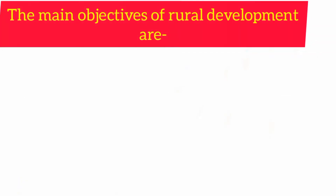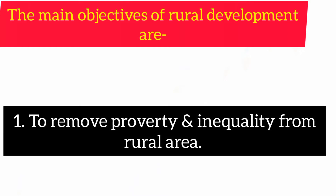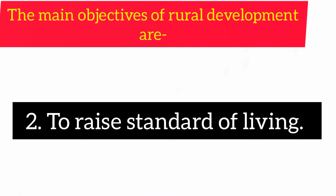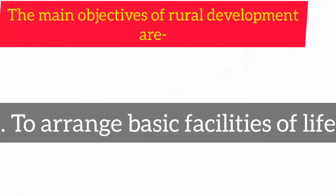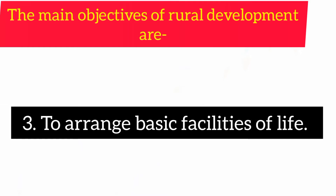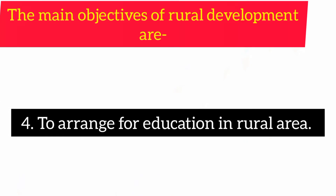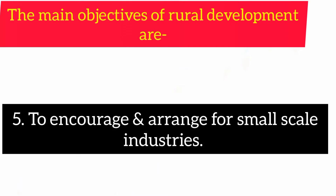The main objectives of Rural Development are: 1. To remove poverty and inequality from rural areas. 2. To raise the standard of living. 3. To arrange basic facilities of life. 4. To arrange for education in rural areas. 5. To encourage and arrange for small-scale industries.